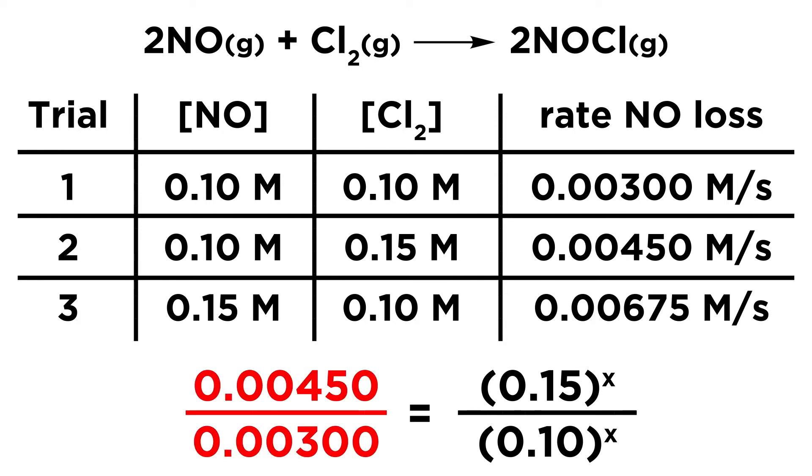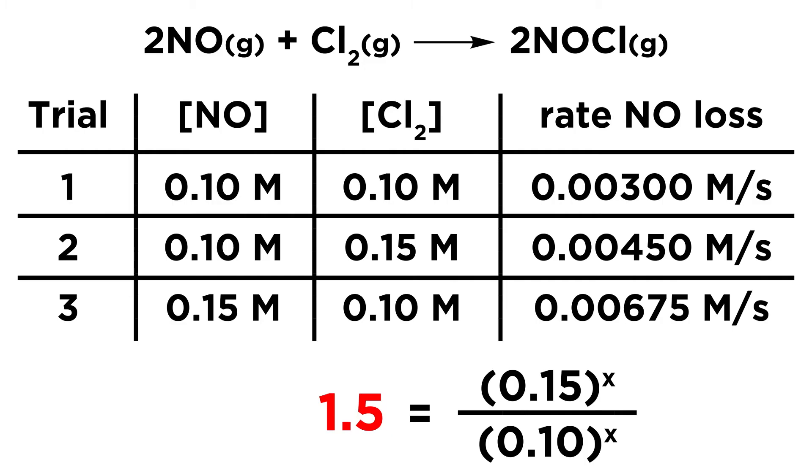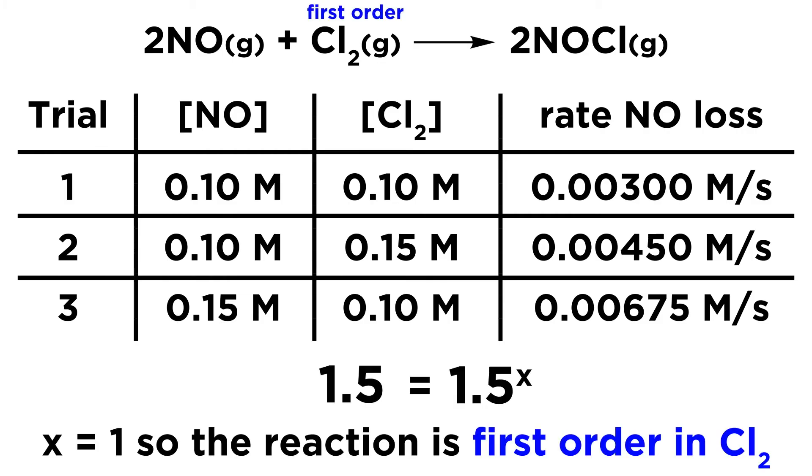So this side will simplify to 1.5, and then on the right, since these are raised to the same exponent, we can take 0.15 and divide by 0.10, and that will be 1.5 to the x. Now, in order for 1.5 to the x to be equal to 1.5, x must be 1. So an x value of 1 means that the reaction is first order in Cl2. So first order, because x equals 1.